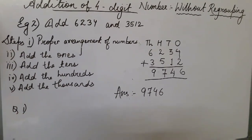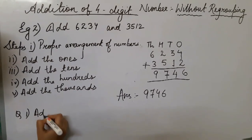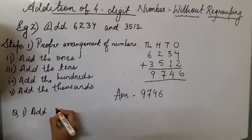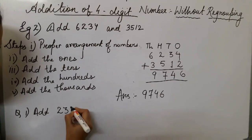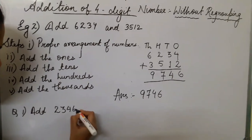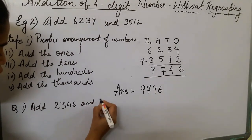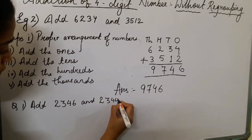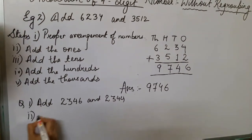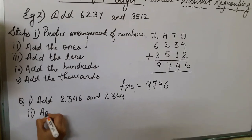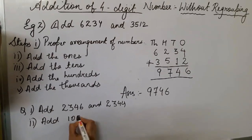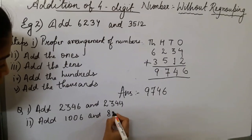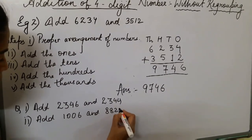Here are some questions for you in without regrouping — you need to add the numbers without regrouping, so copy them down and solve. Add 2,346 and 2,344. The next question: add 1,006 and 8,822.